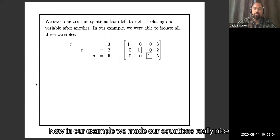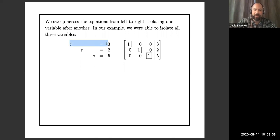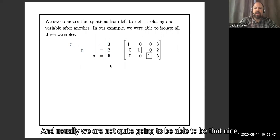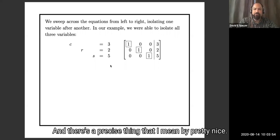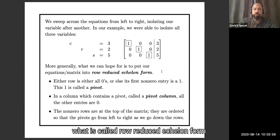In our example, we made our equations really nice — we got each variable by itself: c equals 3, r equals 2, s equals 5. Usually we are not quite going to be able to be that nice, but we'll be able to be pretty nice, and there's a precise meaning to that. We're going to be able to put our equations into what is called row-reduced echelon form.